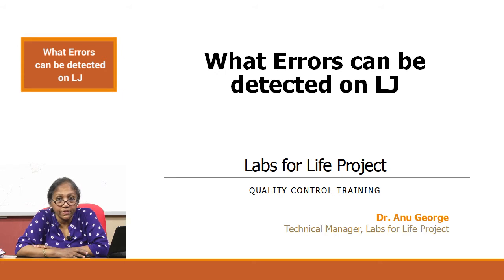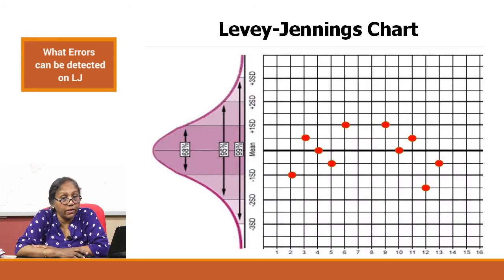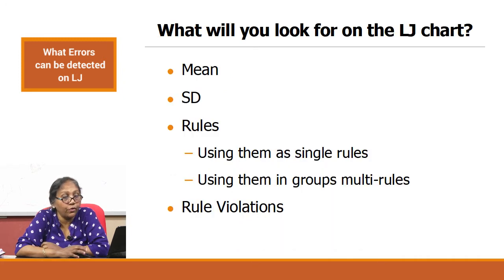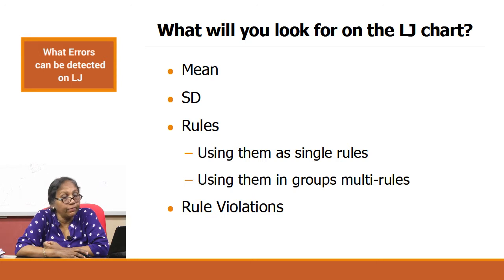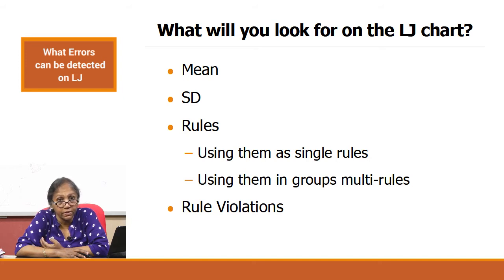What errors can be detected on the LJ? Looking at the LJ graph — we already know it is a Gaussian put on its side with frequency on one axis where you plot the data points. What will you look for on the LJ charts? You look at the mean. It denotes accuracy and you need the mean to stay stable and it should not shift. We also know we have to look at the standard deviation, which should also stay stable. If the dispersion increases, that indicates random errors in your system.